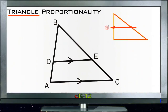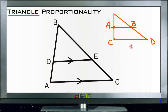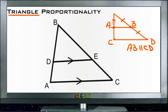If we call this A, this B, this C, and D, then AB will be parallel to CD, and each of these segments will be congruent to each other, because we divided them in two to get the midpoints of both sides.